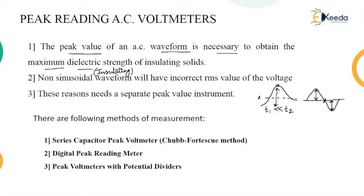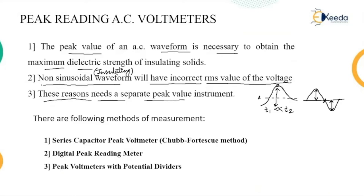The problem with this method is whenever there is a non-sinusoidal waveform present. If the waveform is sinusoidal, then the peak reading can easily be taken. But if the waveform is non-sinusoidal, then it is somewhat difficult to have the proper reading and the RMS value of the voltage is not correct. These are the reasons we need a separate peak value instrument, so we have to use peak reading AC voltmeters for the measurement purpose.